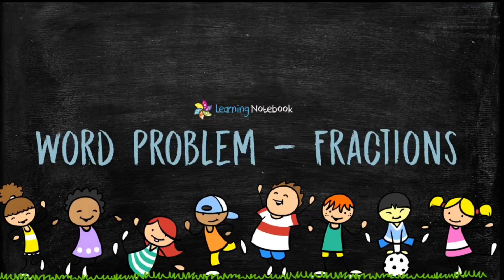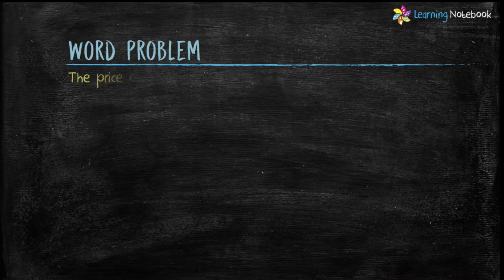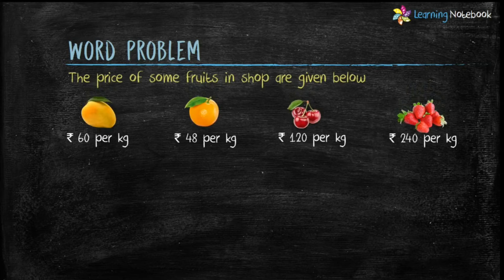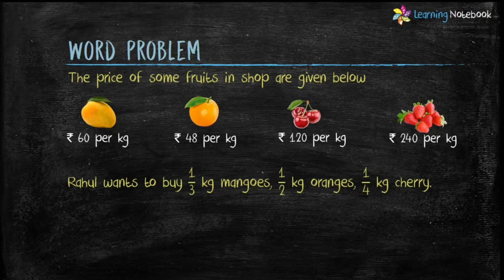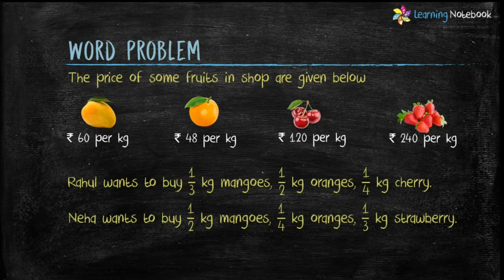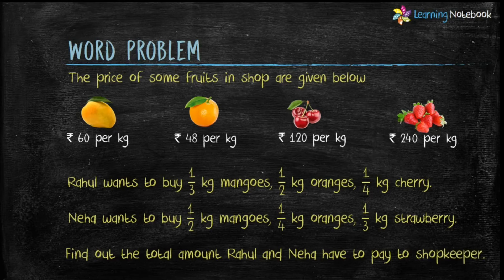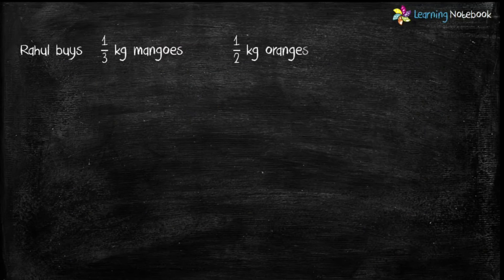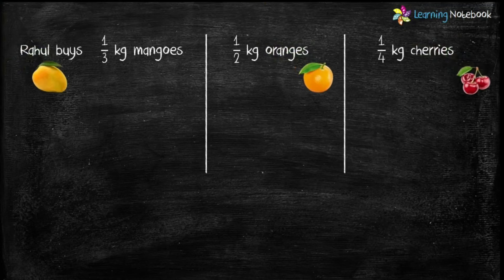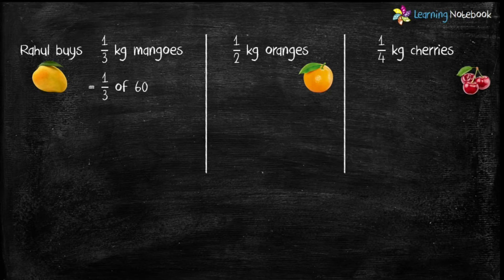Now let's apply the concept of fractions in solving a word problem. The price of some produce in a shop are given. Rahul wants to buy one-third kg mangoes, half kg oranges, and one-fourth kg cherries. Find the total amount Rahul has to pay to the shopkeeper. Cost of one kg mangoes is Rs 60. Therefore, cost of one-third kg mangoes is 1 by 3 of 60. Divide 60 by 3 and cost comes out to be Rs 20. Cost of one kg oranges is Rs 48. So cost of half kg oranges is 1 by 2 of 48. Divide 48 by 2, which is equal to Rs 24.